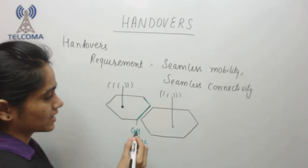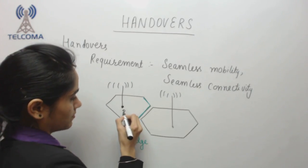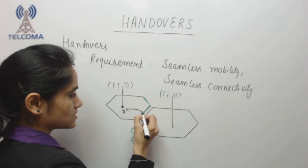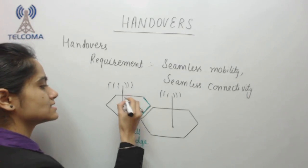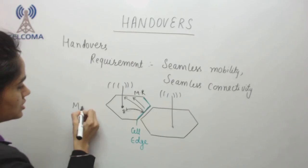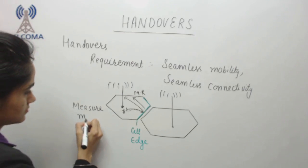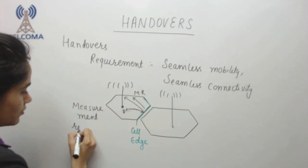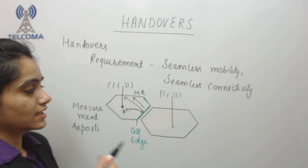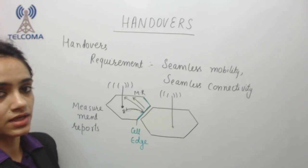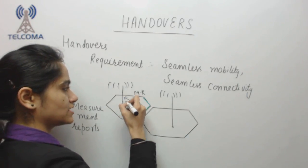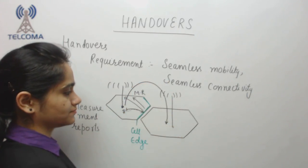If we have a user equipment (UE) that starts moving and reaches the cell boundary, it sends an MR — MR stands for measurement report. The UE sends this measurement report to its current cell, indicating that it is moving into a poor network area and requesting a handover to another cell.